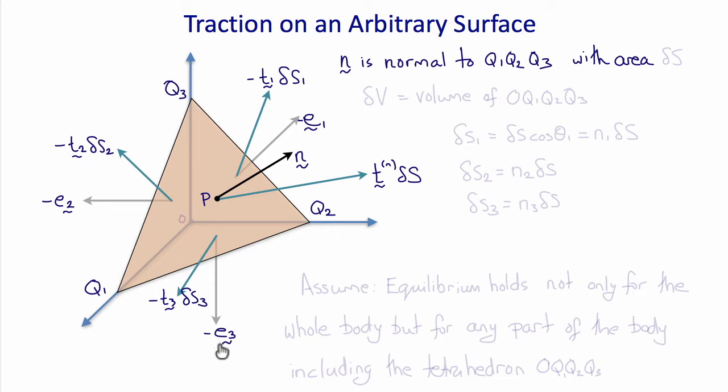So again n is the unit normal to q1, q2, q3. Delta v is the volume of the tetrahedron O, q1, q2, q3.